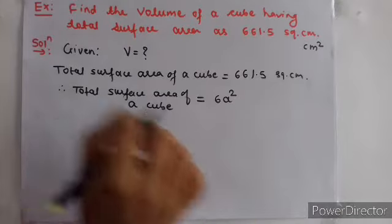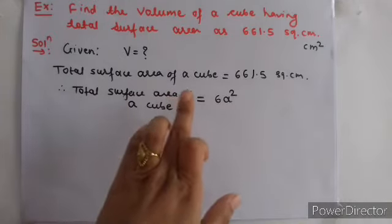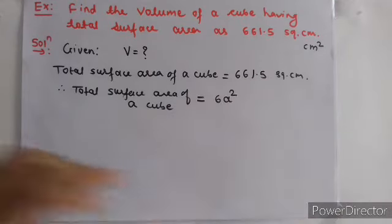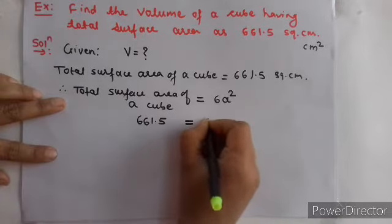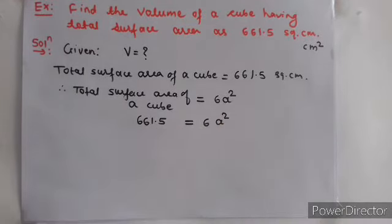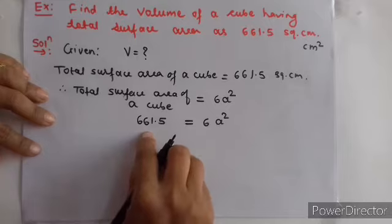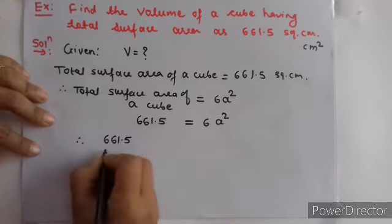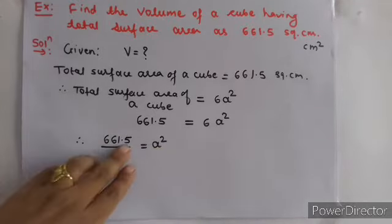Formula लिख दिया. अब जिसकी value आपको पता है वहाँ पे वो value हम put करेंगे. Left hand side में total surface area of a cube है, और यह value तो हमें पता है — 661.5. तो यहाँ पे हम यह value put करेंगे: 661.5 = 6 × a². अब हमें a की value find करनी है, तो 6 को इस side में transfer करना पड़ेगा. 6 अभी multiplication में है, इस side में आएगा तो division हो जाएगा. So therefore, 661.5 ÷ 6 = a².